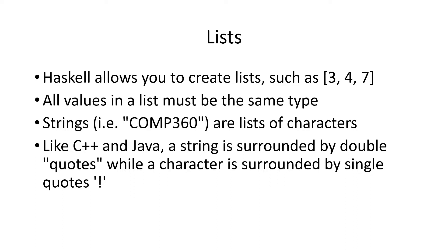Haskell considers a string to be a list of characters. Like C++ and Java and many other languages, a string can be defined by surrounding it with double quotes. Single quotes are used to designate a single character.